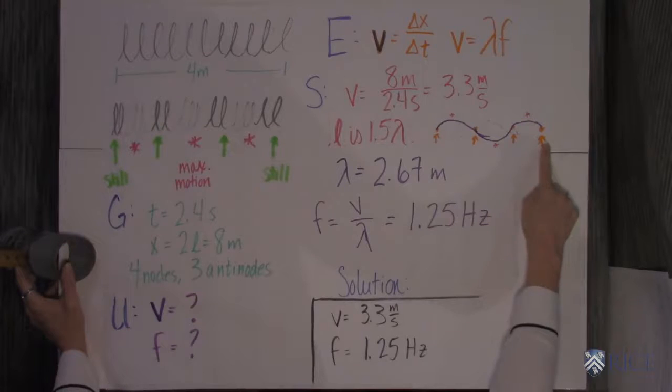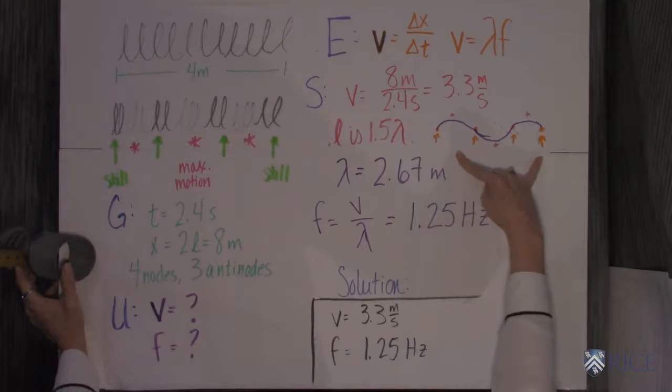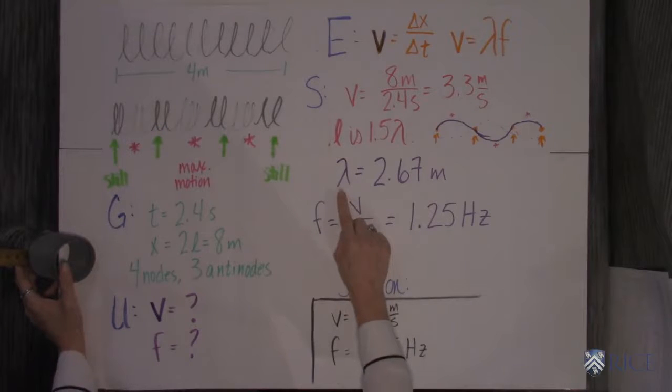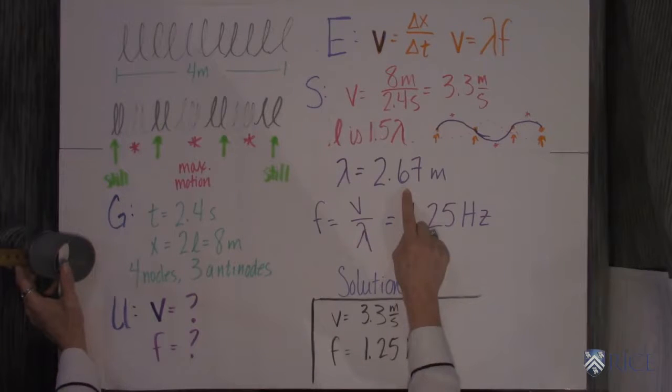If you draw it out like this, you can see that four nodes and three antinodes is one and one half wavelength. So the length has one and one half wavelengths in it. So that tells you that our wavelength is 2.67 meters.